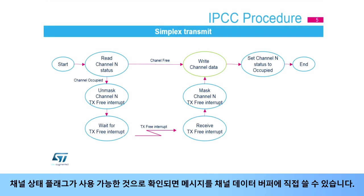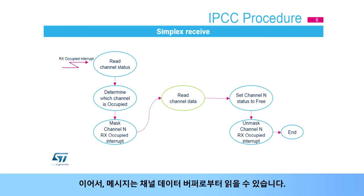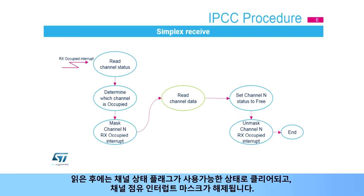When the channel status flag is checked to be free, a message can be directly written in the channel data buffer. When a channel-occupied interrupt is generated, the receiving side determines which channel is occupied and masks the appropriate channel-occupied interrupt. Subsequently, the message can be read from the channel data buffer. Once read, the channel status flag is cleared to free, or flow-on, and the channel-occupied interrupt is unmasked.